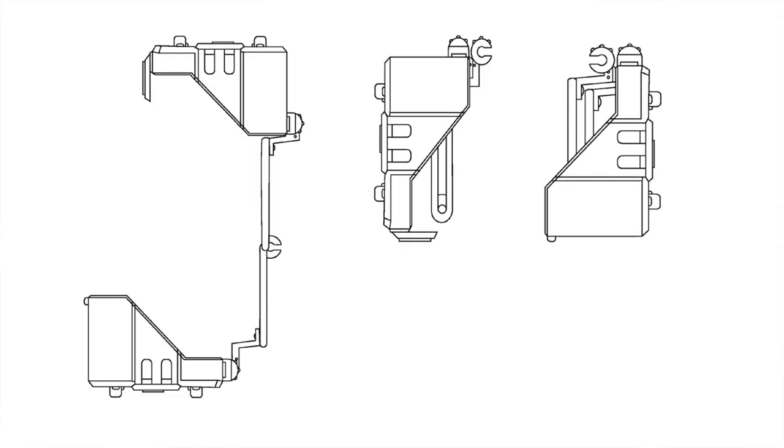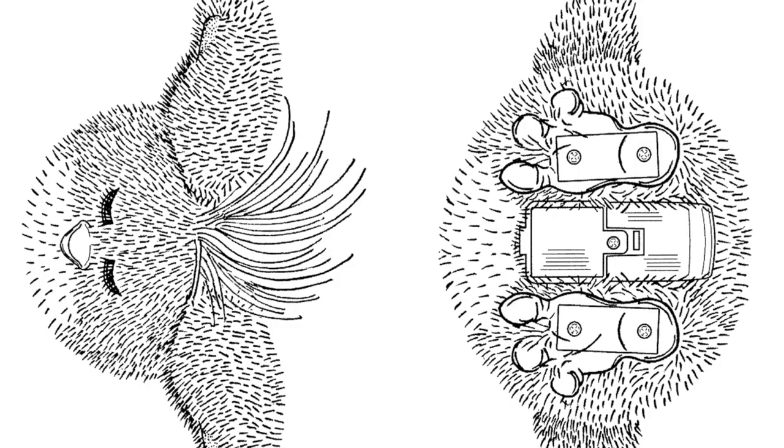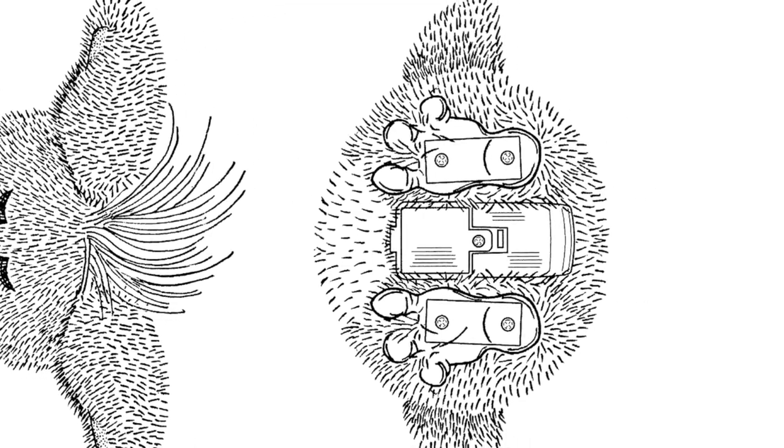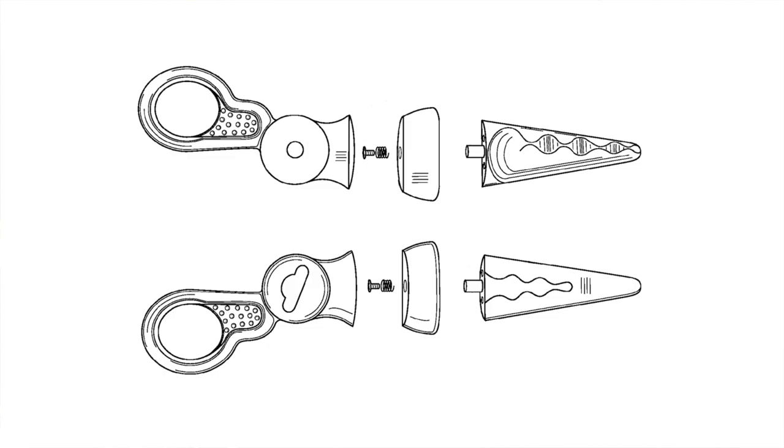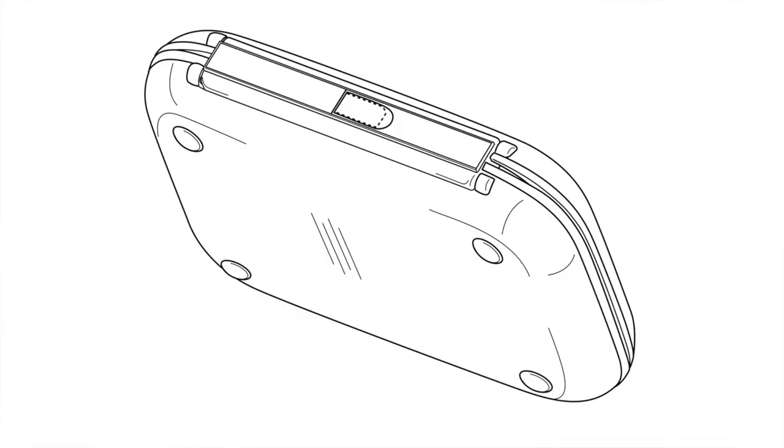However, there are the same views that tend to show up regardless of the type of illustration that you need to do. Those views are the front view, the side view, the top view or bottom view, the cross section view, my favorite the exploded view, and of course the isometric view.